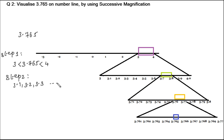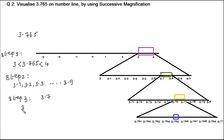As part of step 2, let's divide the portion between 3 and 4 into 10 equal parts: 3.1, 3.2, 3.3, and so on up to 3.9. The first digit after the decimal point is 7, so we focus between 3.7 and 3.8 and divide that into 10 equal parts: 3.71, 3.72, and so on up to 3.79.